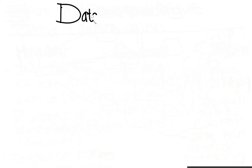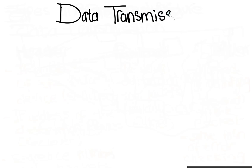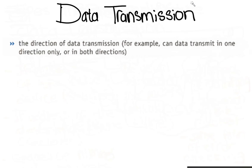Let's talk about data transmission. Data transmission can be either over a short distance, for example computer to printer, or over longer distances, for example from one computer to another in a global network. Essentially, three factors need to be considered when transmitting data.